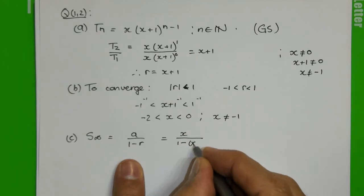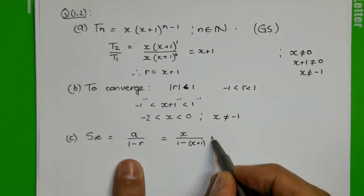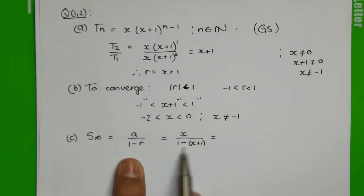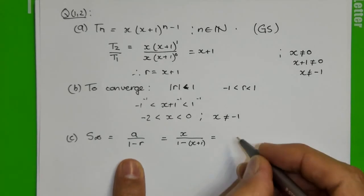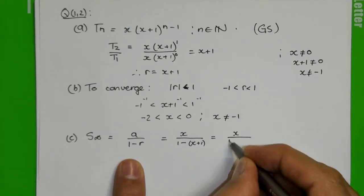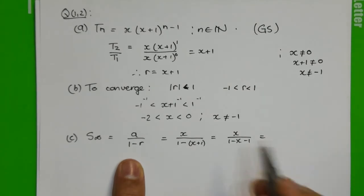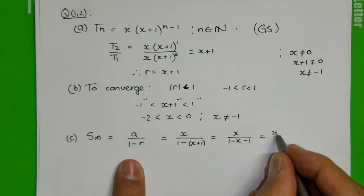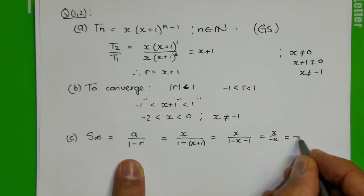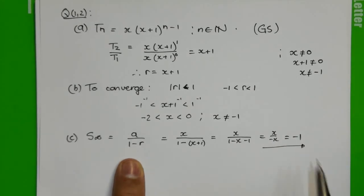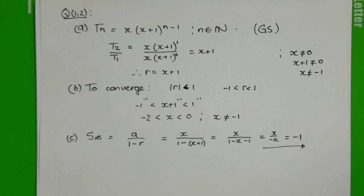So it's 1 minus x plus 1. Now just clean it up nicely and distribute that negative correctly. Then you have x over 1 minus x minus another 1. The 1 minus 1 is 0. Leaves you with x over minus x. And that is minus 1. So your sum to infinity indeed here is negative 1.